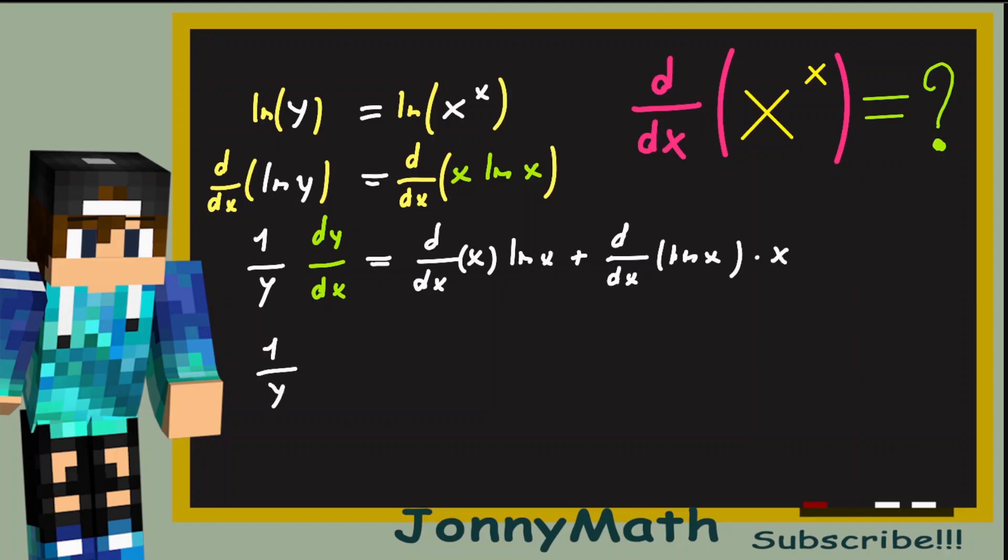So 1 over y times dy over dx. The derivative with respect to x of x is just 1 times the natural log of x, plus the derivative of ln x is just 1 over x. So plus 1 over x times x.